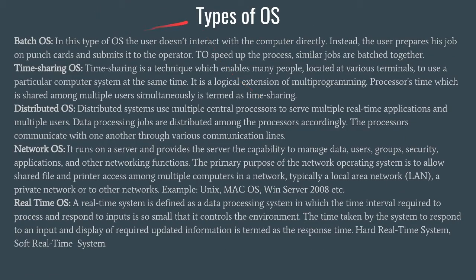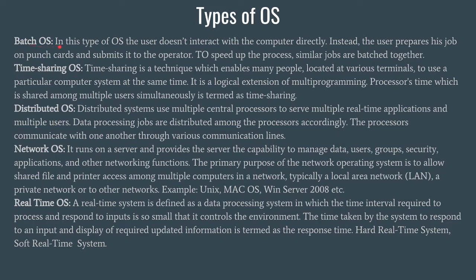There are several types of OS. A few of them are Batch OS, Time Sharing OS, Distributed OS, Network OS, and Real-Time OS. In Batch OS, the user does not interact with the computer directly. Whatever task the user has to perform, he punches it on punch cards, prepares a job list, and hands it over to the operator. To speed up the process, the operator batches together jobs that are similar to each other.